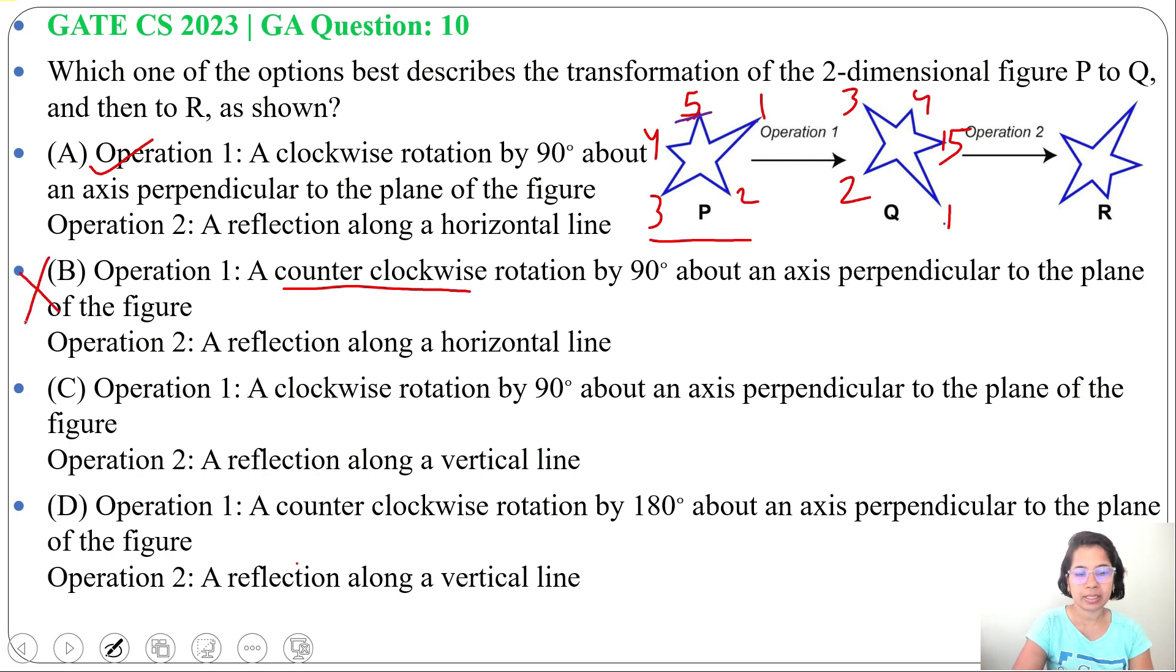Then option C, operation 1: clockwise rotation of 90 degrees about an axis perpendicular to the plane of the figure. This is correct. We'll check the operation 2. First we are seeing operation 1. Next option D, operation 1: a counterclockwise rotation. It's a clockwise rotation, not counter. So due to this, it's wrong.